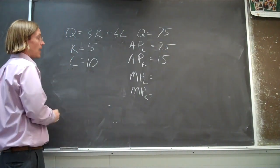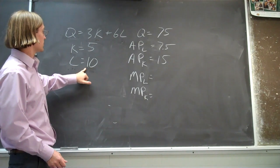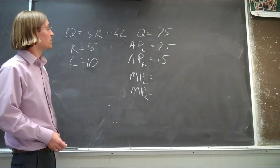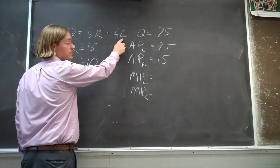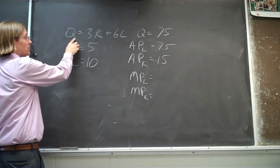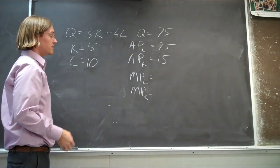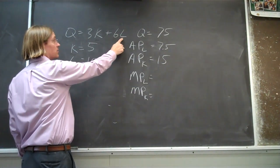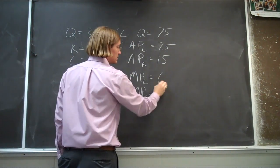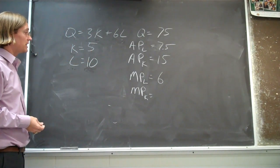Now what if we were to add one more unit of labor? How much more output are we going to get from that extra unit of labor? If instead of using ten units of labor we use eleven — adding one more — with this fairly simple production function, if you add one more unit of labor, the output Q is going to go up by the coefficient six. So the marginal product of labor is six — you multiply that additional unit by six, so you get six more units of output with each additional unit of labor that you add.